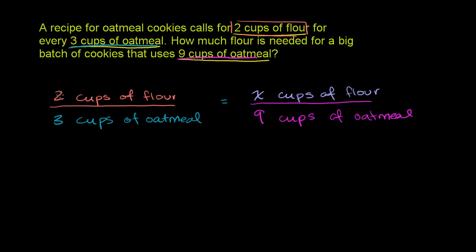So all we're saying, look, we need two cups of flour for every three cups of oatmeal. That has to be the same as x for every nine cups. The proportion has to hold. These ratios have to simplify to the same fraction.